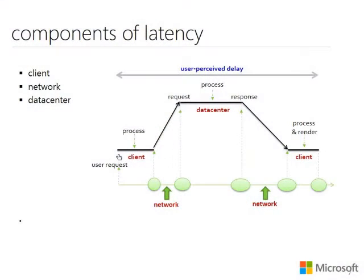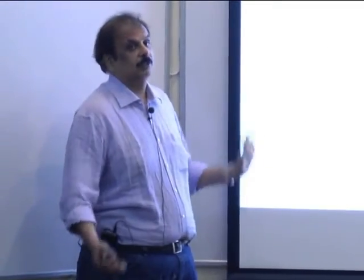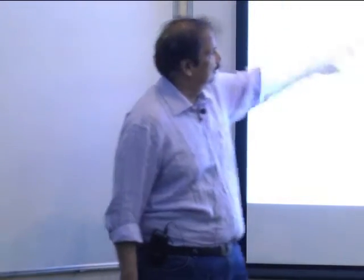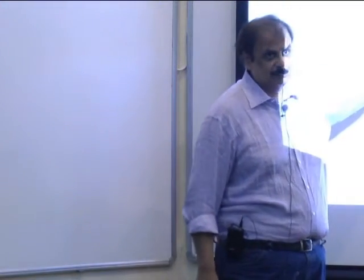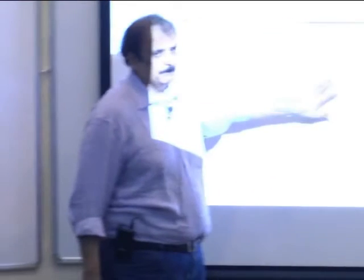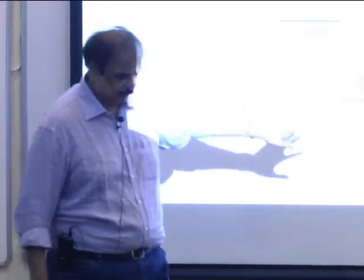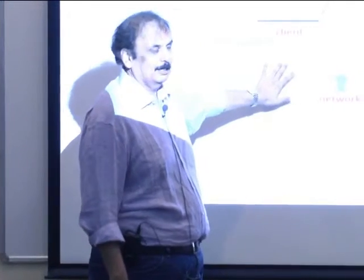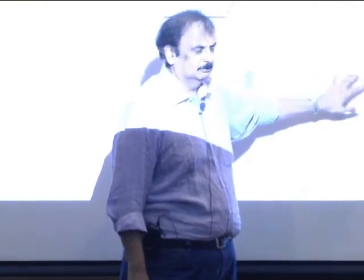Let's think very simply about the components of latency. There's a client, there's a network, there's a data center. The request comes in, the client does some processing, sends it over the network, the data center or the cloud does some processing, sends the results back, and the client receives it. You can optimize what happens in the client — companies like Microsoft and Google do that — and optimize what happens in the cloud, but the network itself is a much more complicated beast.